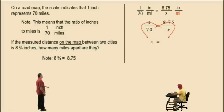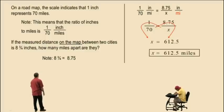x times 1 is x, 70 times 8.75. Charlie, what is that? 612.5. Very nice there, 612.5. And so that's our answer, 612.5 miles, and that's how far apart the cities actually are.